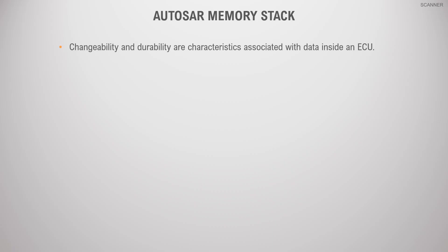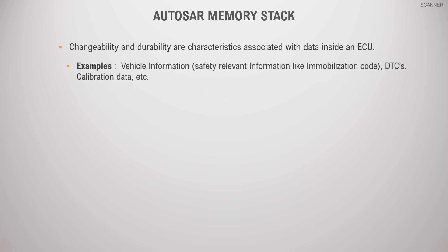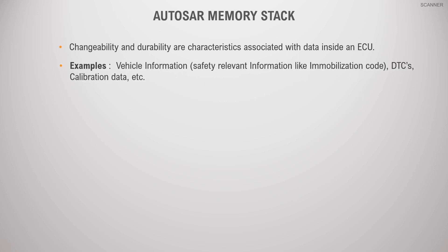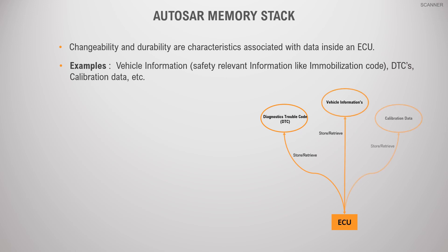Changeability and durability are the main characteristics associated with data inside an electronic control unit. Data whose values are changeable but available across power cycles needs to be stored in non-volatile memory. Diagnostic troubleshooting codes, calibration data, and many vehicle-specific information are a few examples of non-volatile data that are available throughout the entire vehicle lifetime.